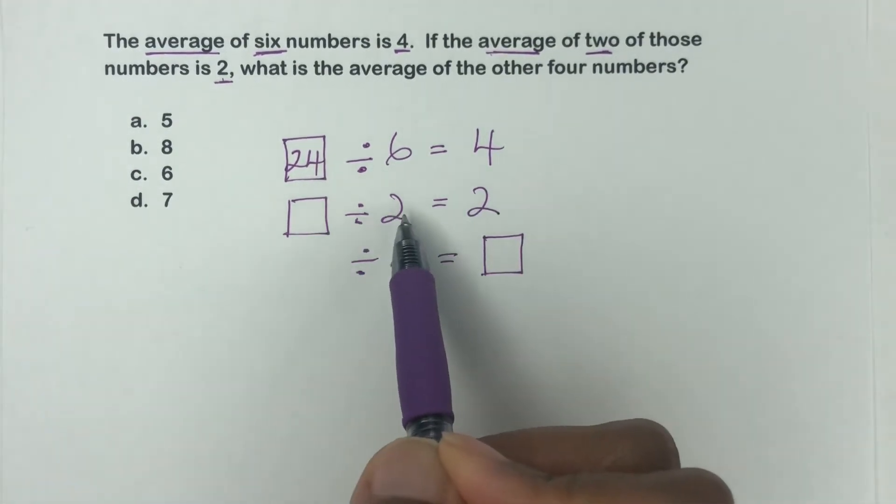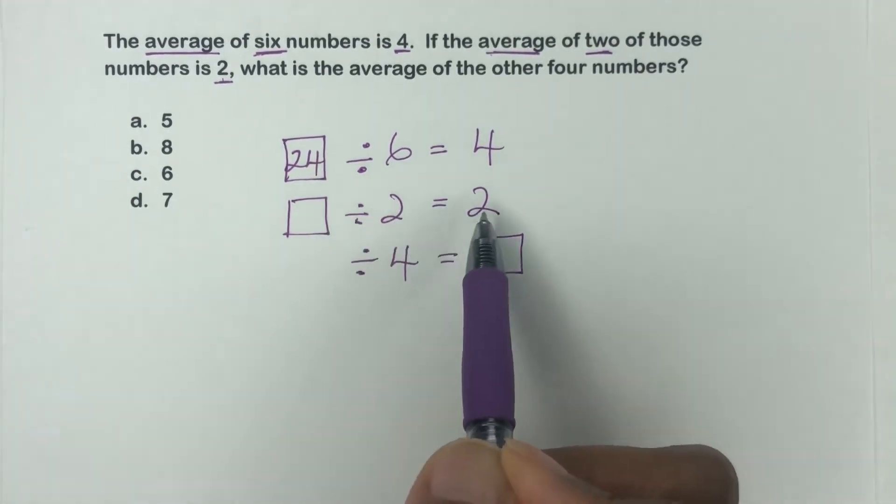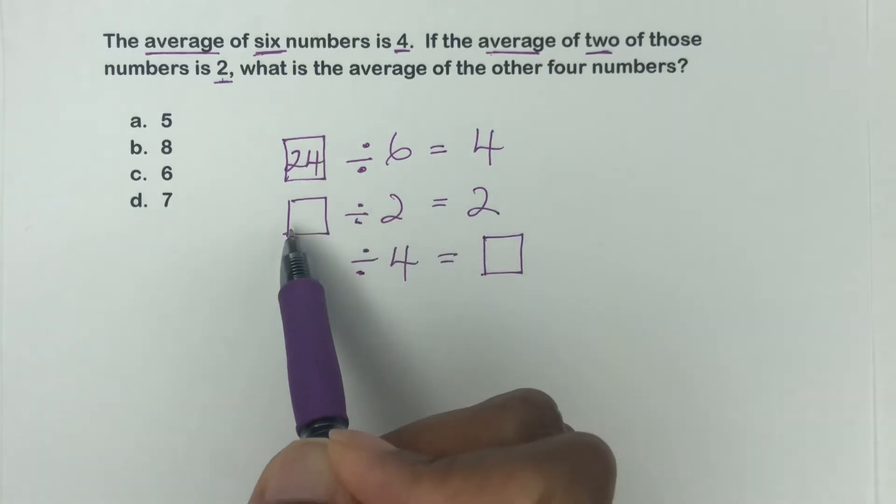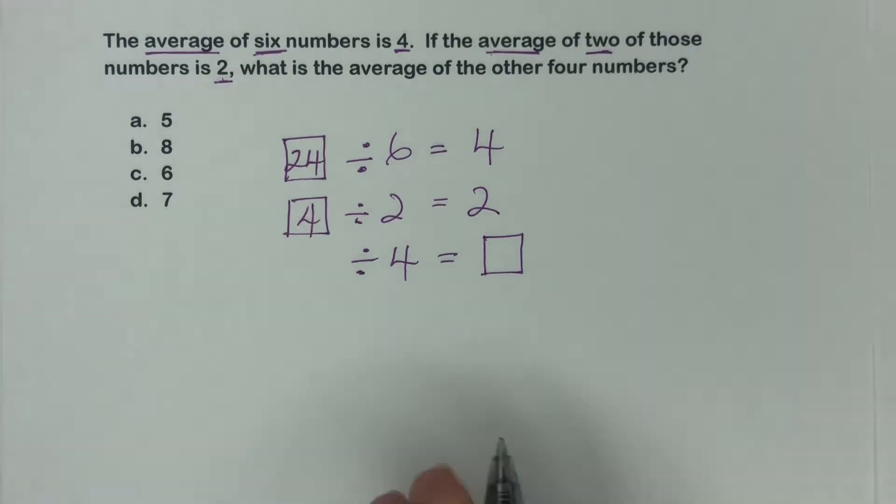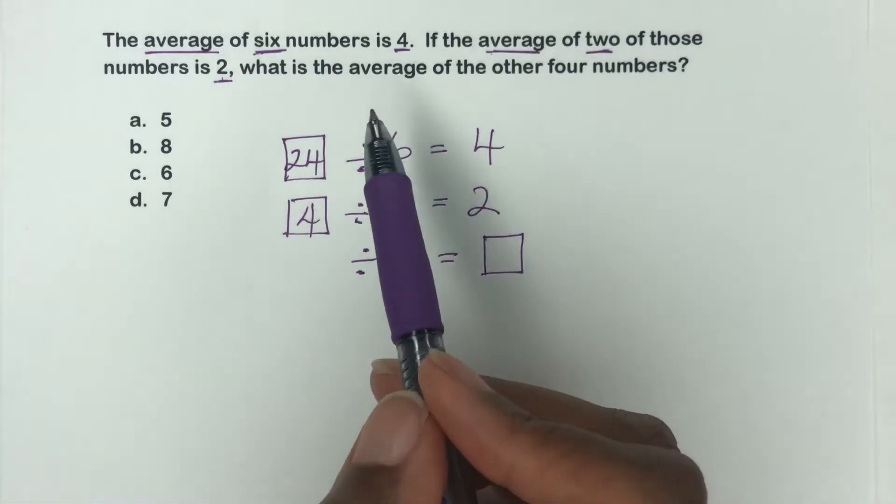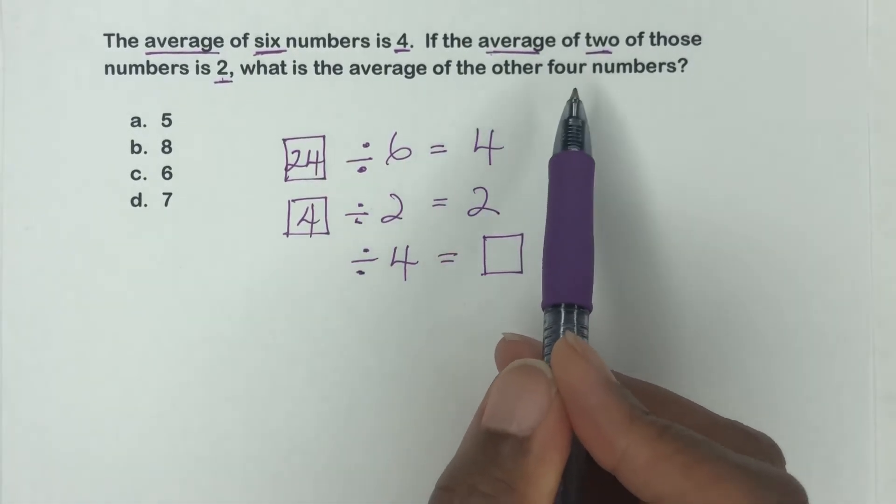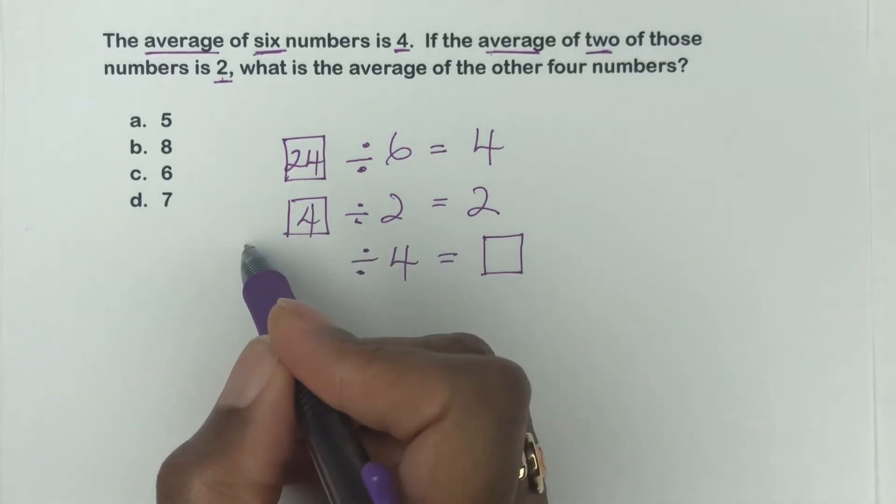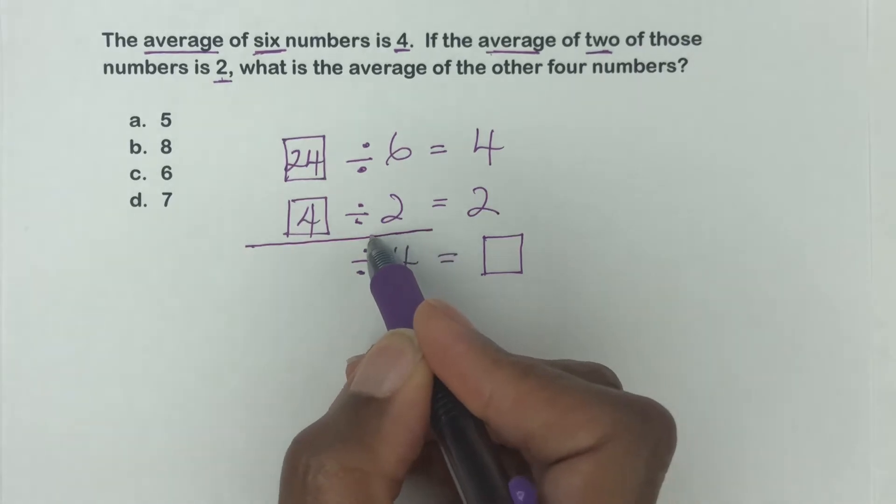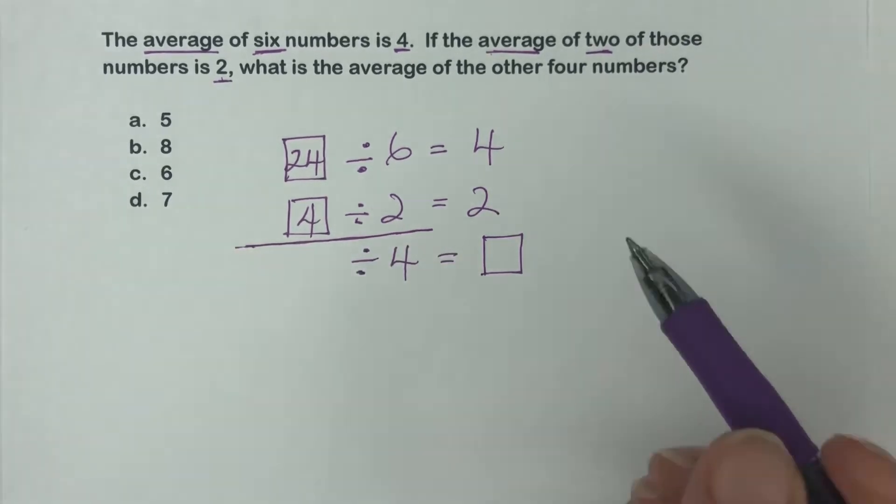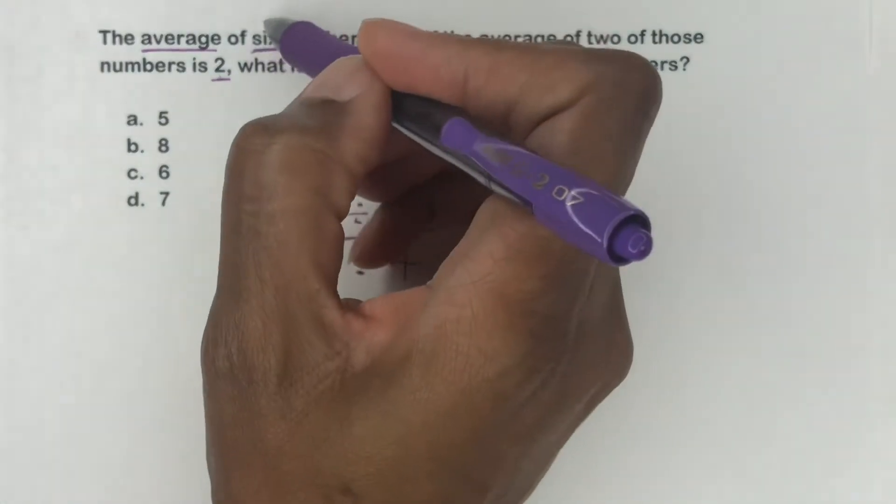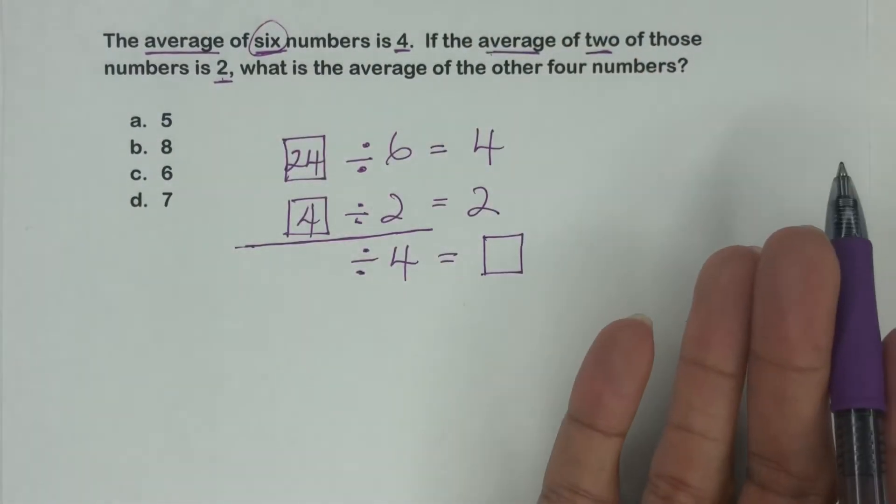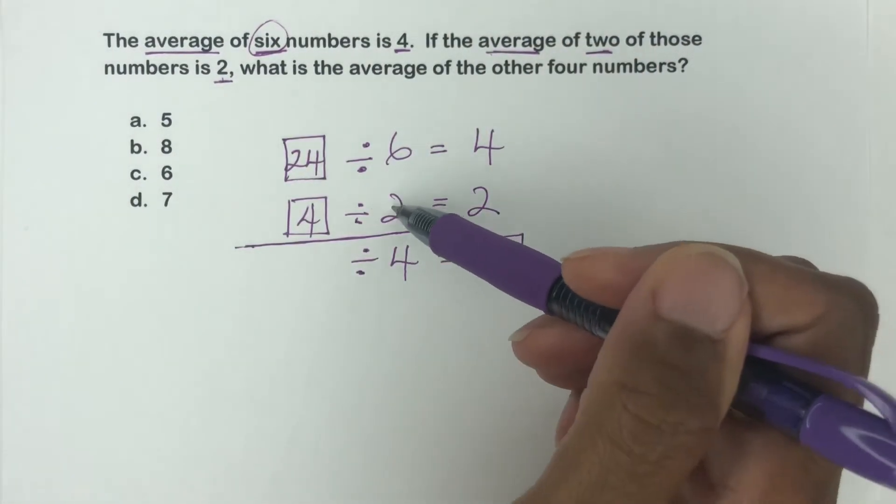And then what times, what sorry, what divided by two is two or two times two is what? So we know that's going to be a four. So we got those two filled in. Now, what is the average of the other four numbers? So here, can you see what's happening here? This is like we're doing a subtraction here then, isn't it? So four plus two is going to give us our total of six. So this is actually the total. That's how many numbers there are all together.